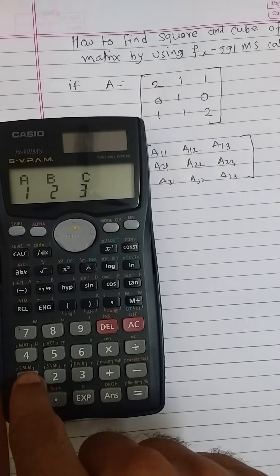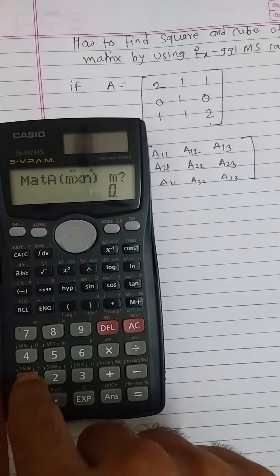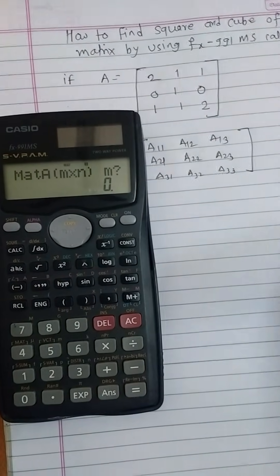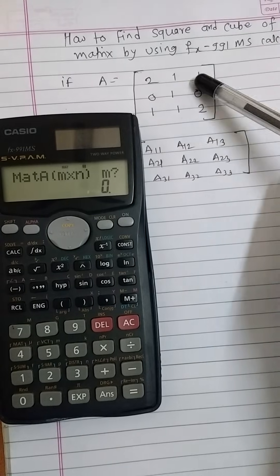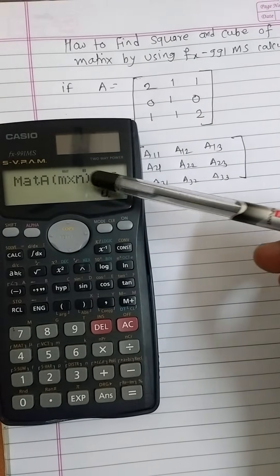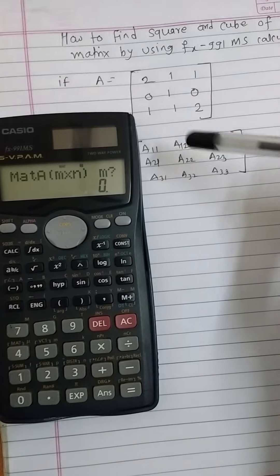Then we will see MatA m cross n, where m is a question mark. Here our matrix is a three by three matrix, and m cross n denotes number of rows cross number of columns. Here the number of rows are three.